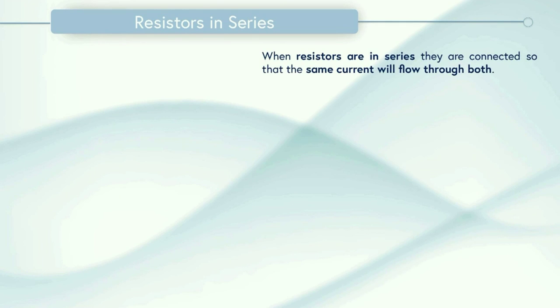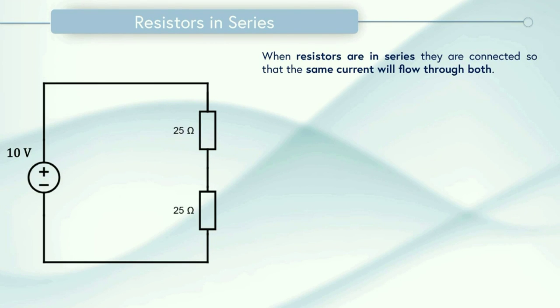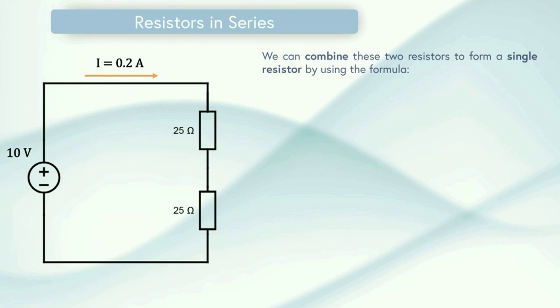When resistors are in series, this means they're connected so that the same current will flow through both of them. So here's an example circuit. We have a DC power supply which will supply current, and then we can see we've got two 25 ohm resistors and these are connected in series. Here's our current and we can see it flowing around the circuit and through each of the resistors in turn.